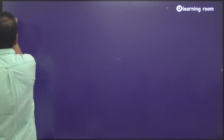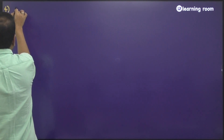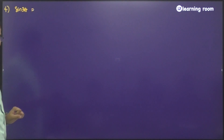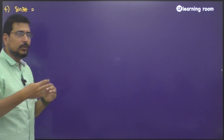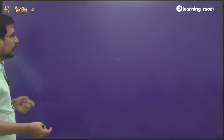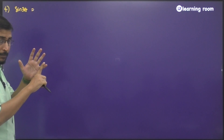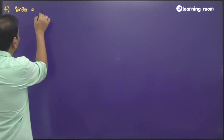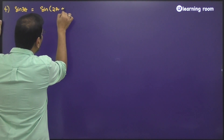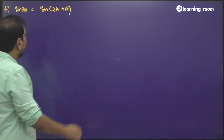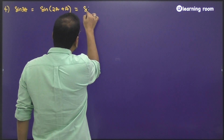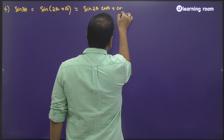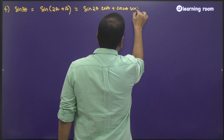The next one is sin 3a. This is also an identity you need to remember. When it crosses 3, you will manipulate it in the problem. You will remember sin a plus b, sin 2a, and sin 3a — these are the identities you need to remember. So sin 3a, you can write it as sin of 2a plus a, which is going to be sin 2a cos a plus cos 2a sin a.